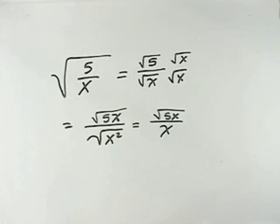So that when we rationalize our denominator, we can write it as the square root of 5x over x.